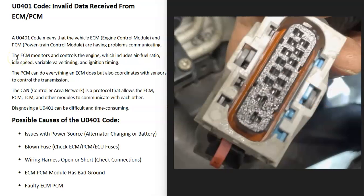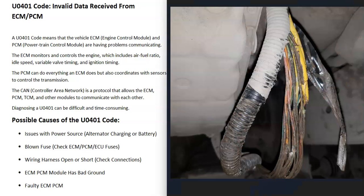Another thing that could cause this is something wrong with the wiring harness — it's not making a good connection or not plugged in correctly. A computer module located in the engine bay can get grease on it, causing bad connections or becoming loose. This includes all the wires running between all the computer control modules. Sometimes rodents get inside vehicles and chew on wires, or other things happen. If there's any open or short inside the wiring, that's going to cause this issue.